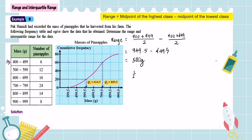To find the first quartile, we use the formula 1 over 4 times the total frequency, which is 80. So 1 over 4 times 80 equals 20. We need to find the value of the first quartile from the graph. From the graph, the value 20 is here — go to the graph, when it touches the curve turn to the horizontal axis. You will get the value of the first quartile, which equals 614.5.